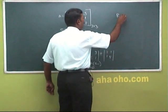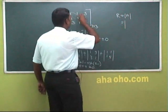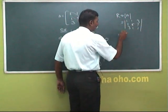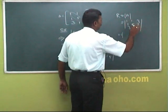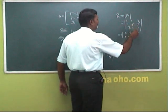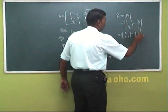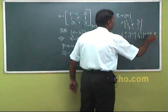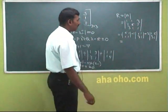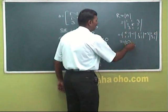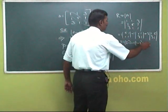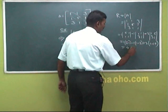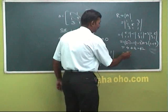For R, we compute the determinant of A: matrix 1 1 3 / 1 5 1 / 3 1 1. Expanding along the first row: 1 into (5 minus 1) minus 1 into (1 minus 3) plus 3 into (1 minus 15). That gives 1(4) minus 1(minus 2) plus 3(minus 14), so 4 plus 2 minus 42 equals minus 36. So R equals minus 36.